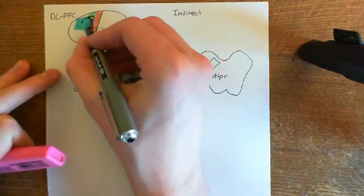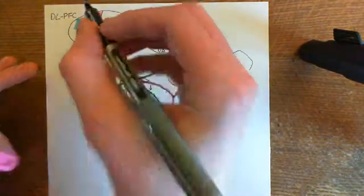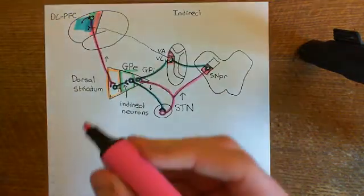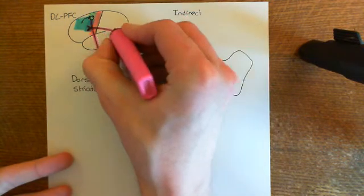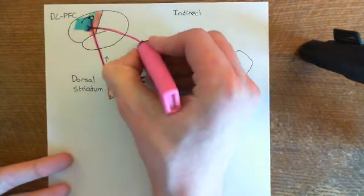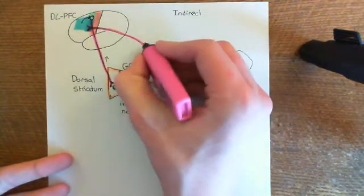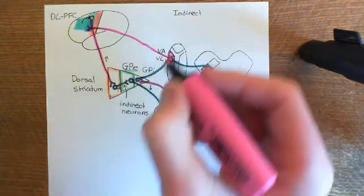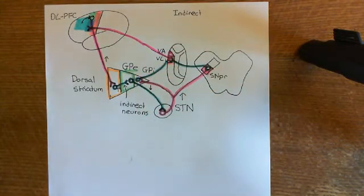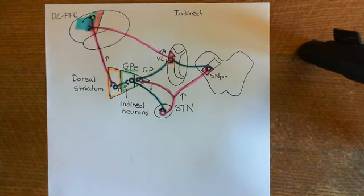Through this indirect pathway, we stop permission going to other portions of the secondary motor cortex, leaving only the portion of secondary motor cortex which actually has the motor plan we want to be initiated. We'll come back to this in the next video.